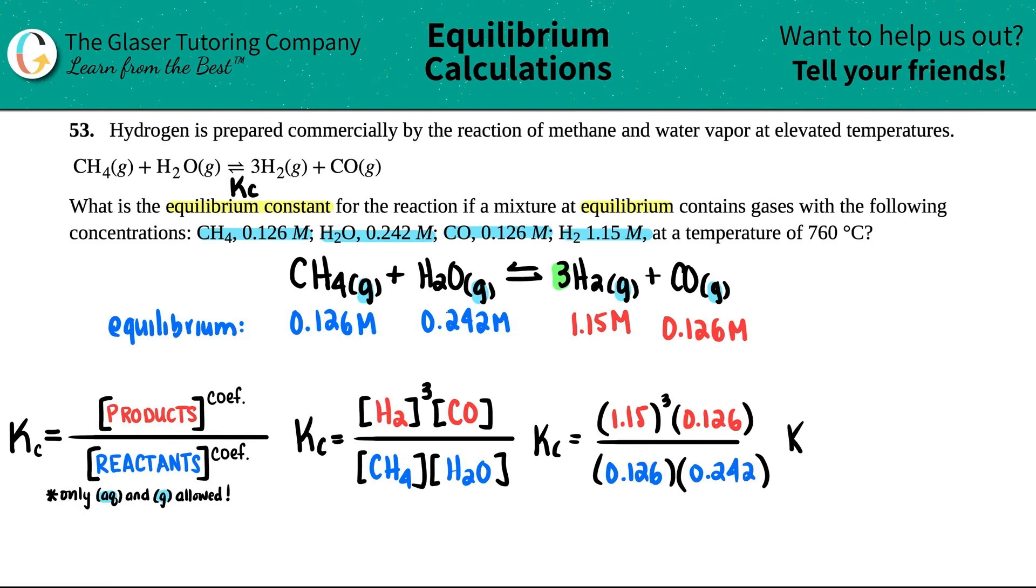Okay. Let's get one number for the top and one number for the bottom. And then divide that by that. And then we just divide the two. So let's see, what number do I get for the top? I get 1.15 cubed times 0.126. I get a lot of decimals. So maybe I'll just say 0.191630. And then the bottom number would be 0.126 times 0.242. I get 0.030492.